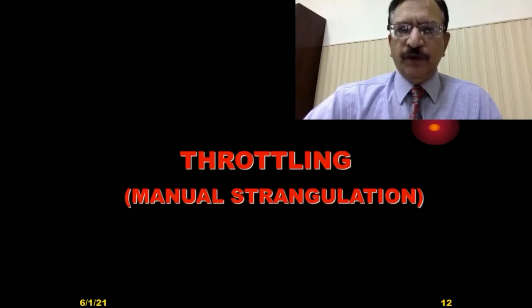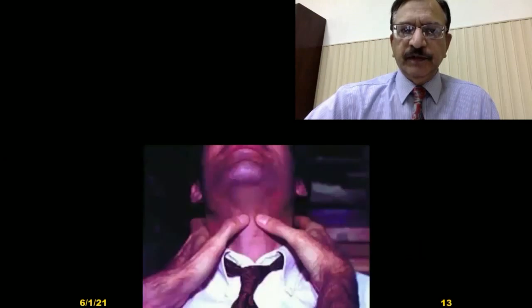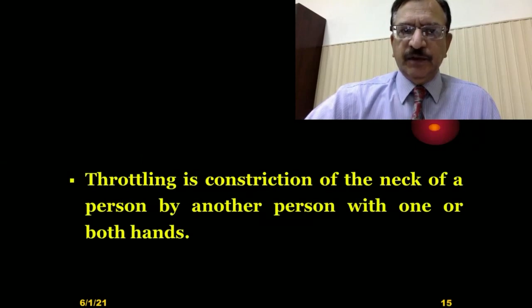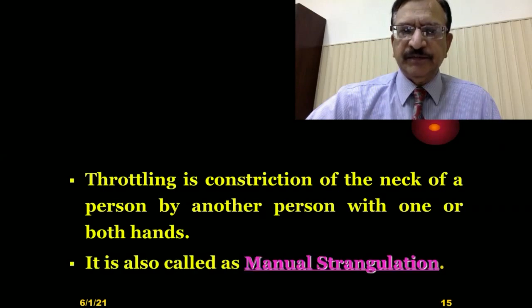Starting with the topic: throttling is also called manual strangulation. It is the compression of the neck by means of hands — that is, the constriction of the neck of a person by another person with one or both hands. That is why it is called manual strangulation.